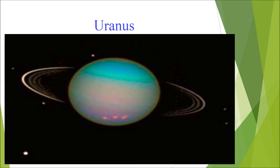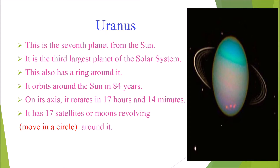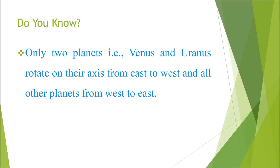Next we are going to learn about Uranus. Uranus is the seventh planet from the sun and the third largest planet of the solar system. It also has a ring around it. It orbits around the sun in 84 years, and on its axis it rotates in 17 hours and 14 minutes. It has 17 satellites or moons revolving around it. Did you know? Only two planets — Venus and Uranus — rotate on their axis from east to west; all other planets rotate from west to east.